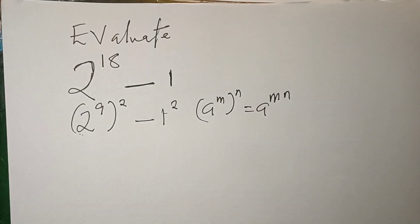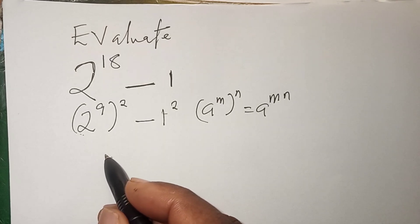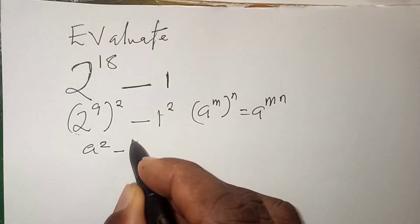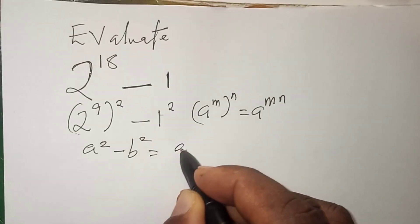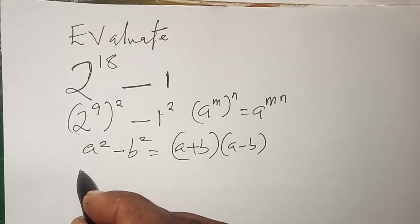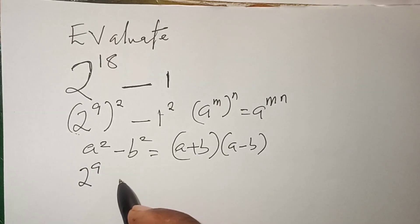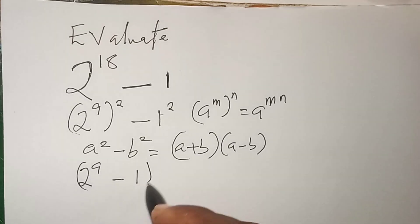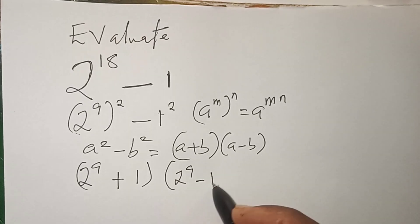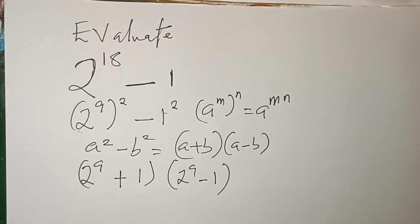So by doing so, we can apply the difference of two squares method. We have A squared minus B squared equals A plus B times A minus B. Applying it here, we get 2 raised to the power 9 plus 1 times 2 raised to the power 9 minus 1.